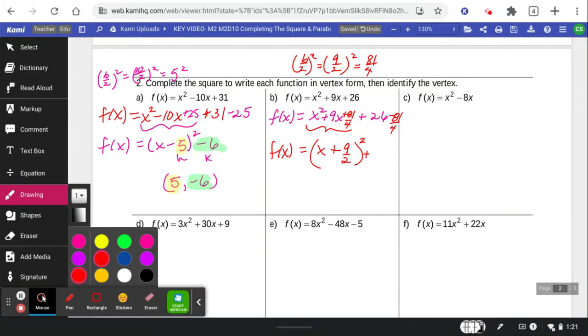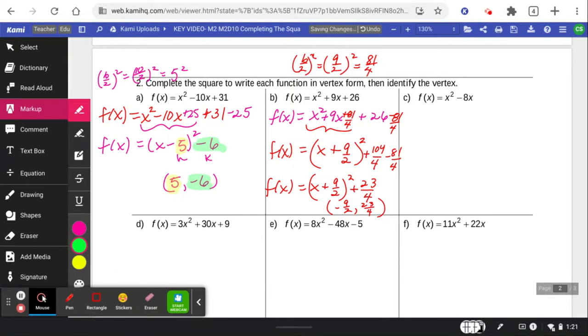So if I grab my calculator, do 26 times 4, I get 104 fourths minus 81 fourths. And so 104 minus 81, that leaves 23 fourths. And so that means that's a vertex of negative 9 halves, 23 fourths. Ew. But that's what it is. And that comes from right here.